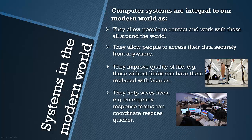Computer systems can also save lives. This picture is from a 999 ambulance response centre. Using computer systems allows them to contact their teams quicker and more easily, so they can coordinate responses to people in need. Obviously this list isn't exclusive — these are just four ideas, but there could be hundreds of examples.